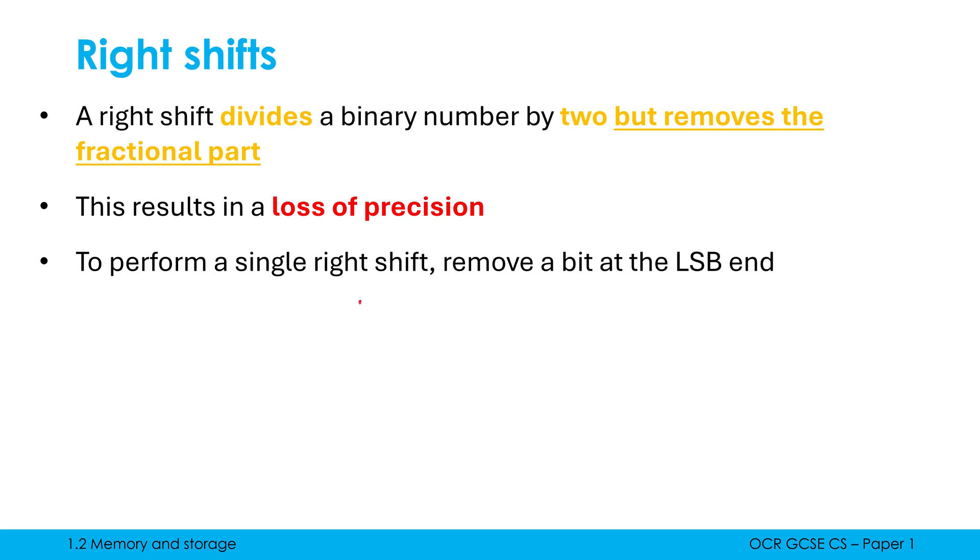Let's pick a different binary number: 1010. To perform a single right shift, I remove a bit at the LSB end. This zero is getting removed. This is called a right shift because digits are moving to the right. The original number was 10 in denary, and the result is 5. This did a clean division by 2.